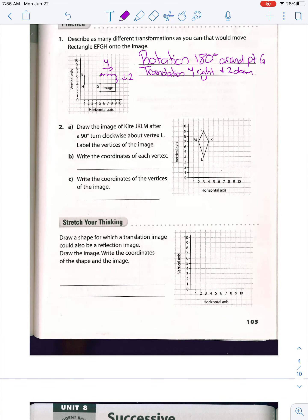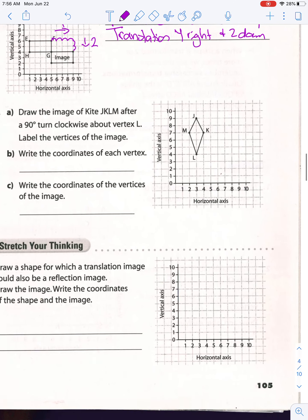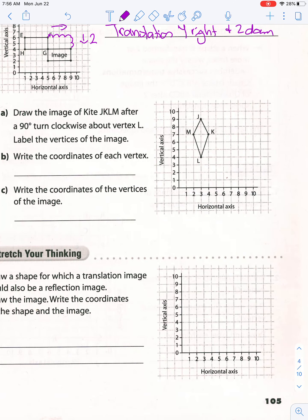The next one: we're doing a rotation clockwise around vertex L. Vertex L is this point, and we're doing a rotation 180 degrees clockwise. I'm going to figure out how far away J is — one, two, three, four, five — it's going to go this way one, two, three, four, five. So here is going to be J prime.